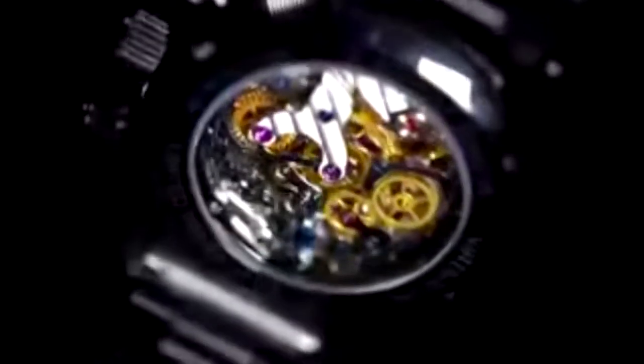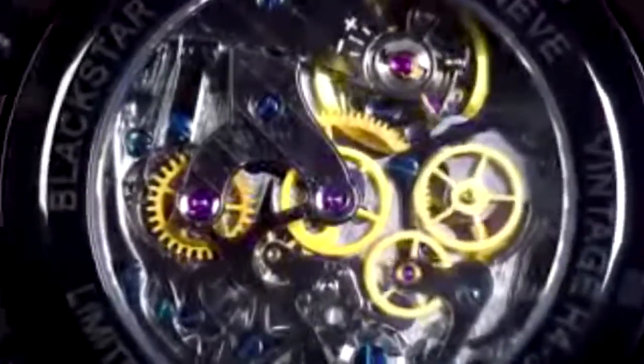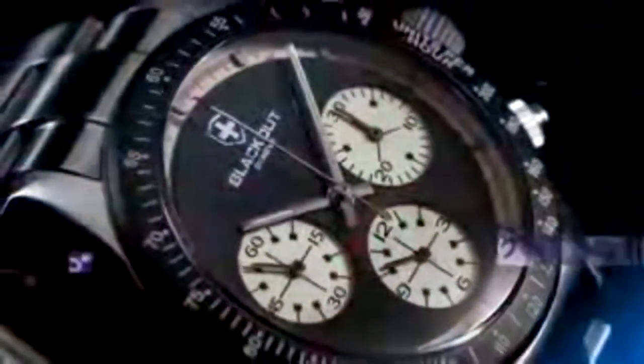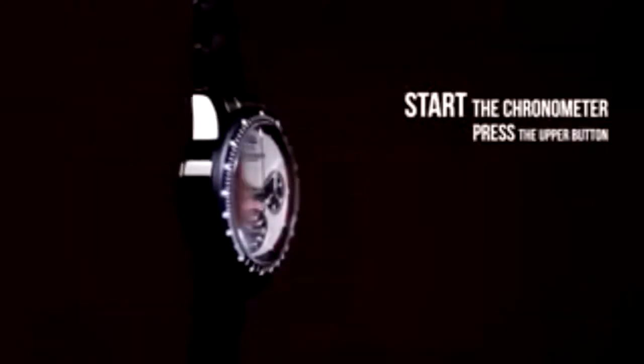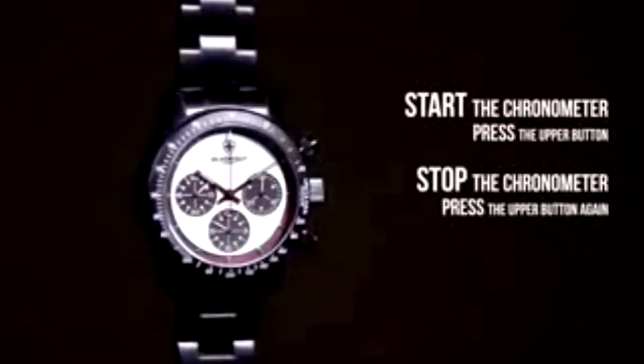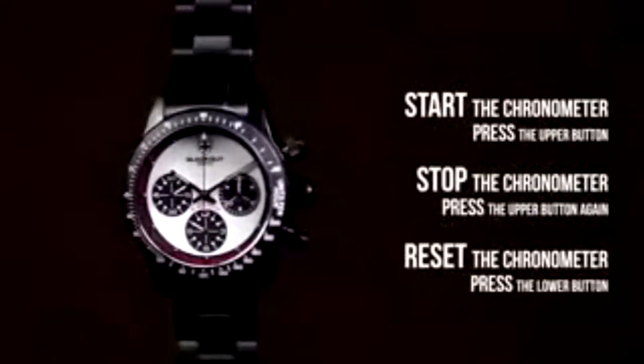There's something magical about a mechanical watch. It's a simple yet complex machine. In order to start the chronometer, you need to press the upper button. When you wish to stop it, you press the same button again. And in order to reset it, push the lower button.